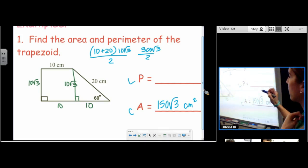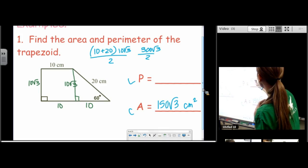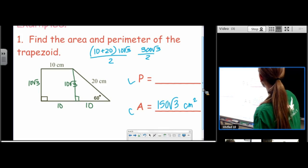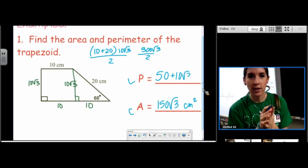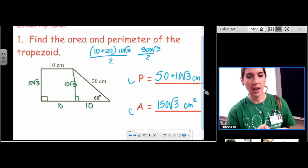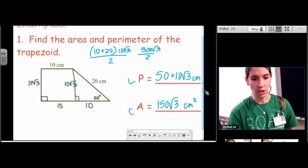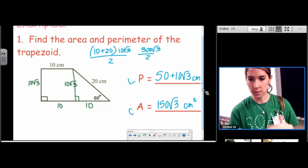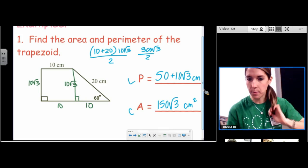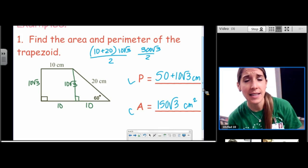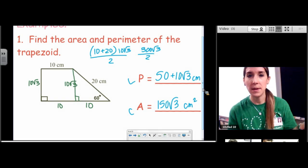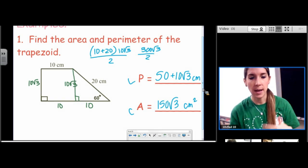50 plus 10 root 3 centimeters. We are never, we're going to continue to never combine radicals with integers. Never combining radicals with integers. So we just separate them with a plus sign, and we don't do anything else about it. Do we put it in our calculator and get a decimal? No. So we keep it exact, but we keep the radicals separate from the integers.